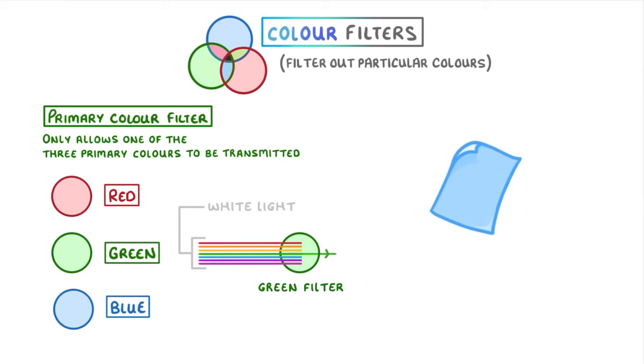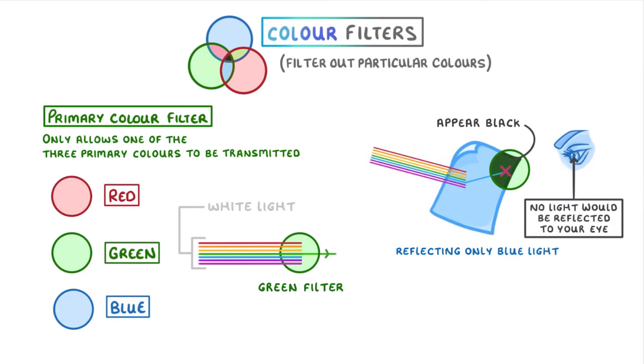Whereas if we looked at a blue object, which must be reflecting only blue light, through a green filter, then it would appear black because the filter would block the blue light from passing through, and so no light would be reflected into your eye.